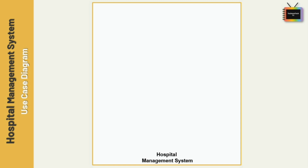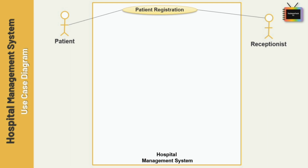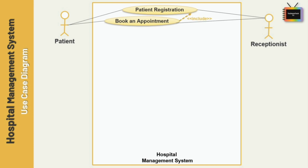Let's continue drawing the general use case diagram. Here I am adding the actor 'Patient'. First, the patient will register in the system with the help of a receptionist, so I am adding the actor 'Receptionist' as well. The next use case is 'Book an Appointment', and I am adding an include relationship from 'Book Appointment' to 'Patient Registration'.